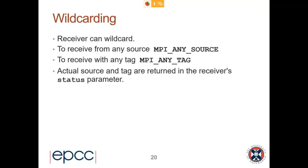The receiver can be wildcarded — you can say MPI_ANY_SOURCE to receive from any other rank, and MPI_ANY_TAG to receive with any tag. It's better to use these things only if you absolutely have to. It's more efficient and safer if you can specify these things explicitly. However, there are good reasons to use MPI_ANY_SOURCE in certain communication patterns — for example, a controller-worker pattern where the controller is just waiting to hear that a task has been completed before sending another one out.